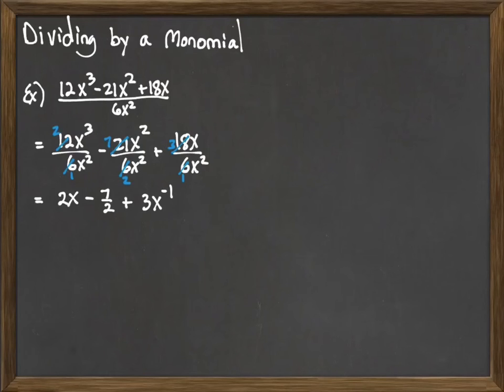We need to go a little further to clean this up. We don't want our final answer to have a negative exponent. The 2x is okay, the 7/2 is okay. But 3x⁻¹—I need to take that x and slide it down to the bottom. So our answer is 2x - 7/2 + 3/x.